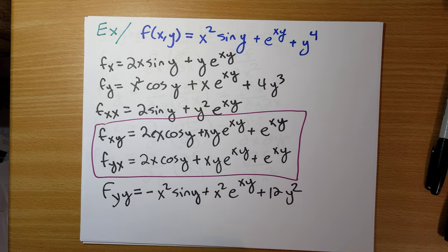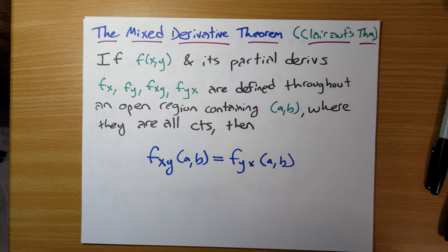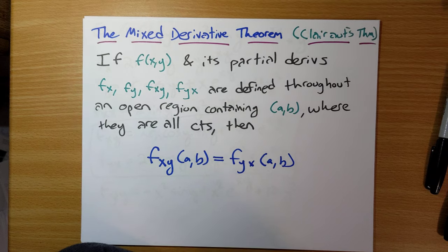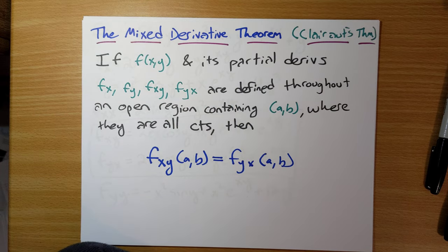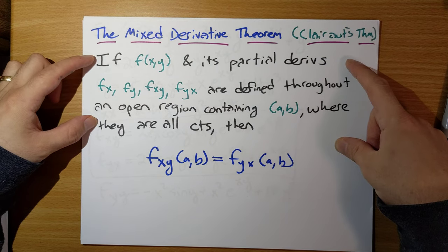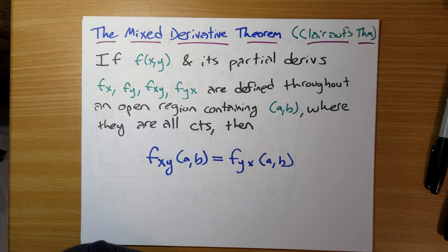The thing you may have spotted: f sub xy equals 2x·cos(y) + xy·e^(xy) + e^(xy), and f sub yx also equals 2x·cos(y) + xy·e^(xy) + e^(xy). Whenever we see something like that, we should be wondering — is it an accident or not? This is not an accident. We have the mixed derivative theorem, also called Clairaut's theorem. It says that if f(x,y) and its partial derivatives f_x, f_y, f_xy, f_yx are defined throughout an open region containing (a, b) where they're all continuous, then f sub xy equals f sub yx at that point.